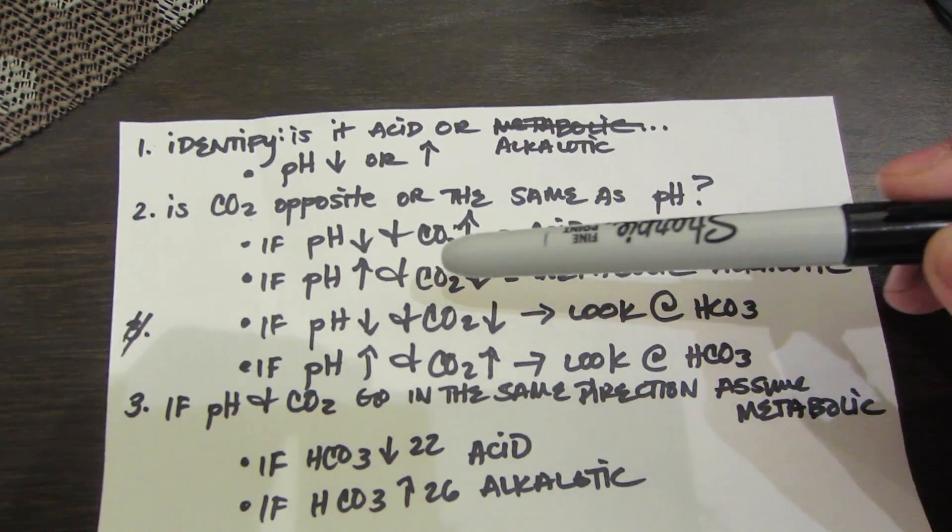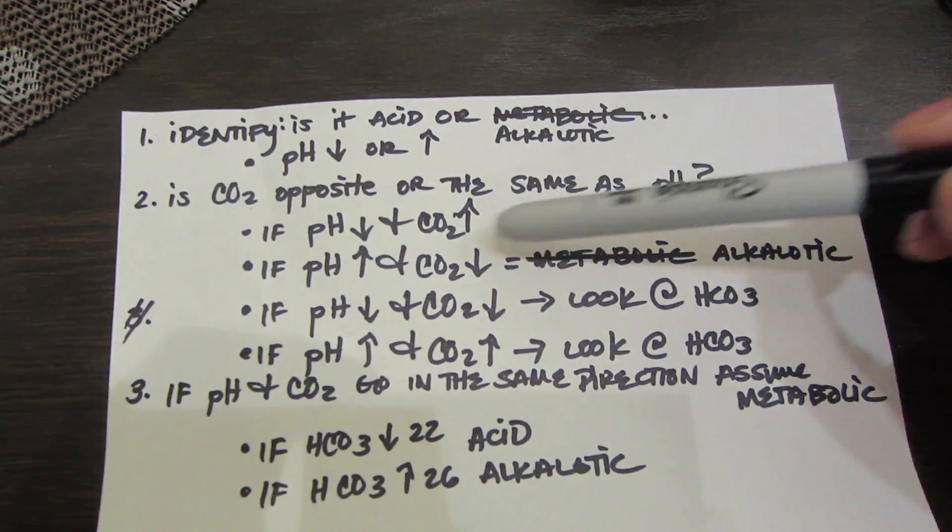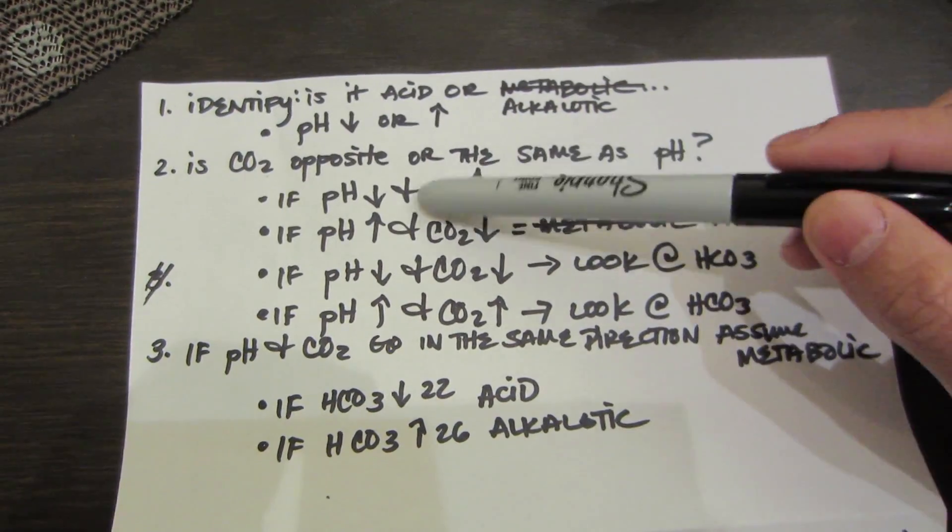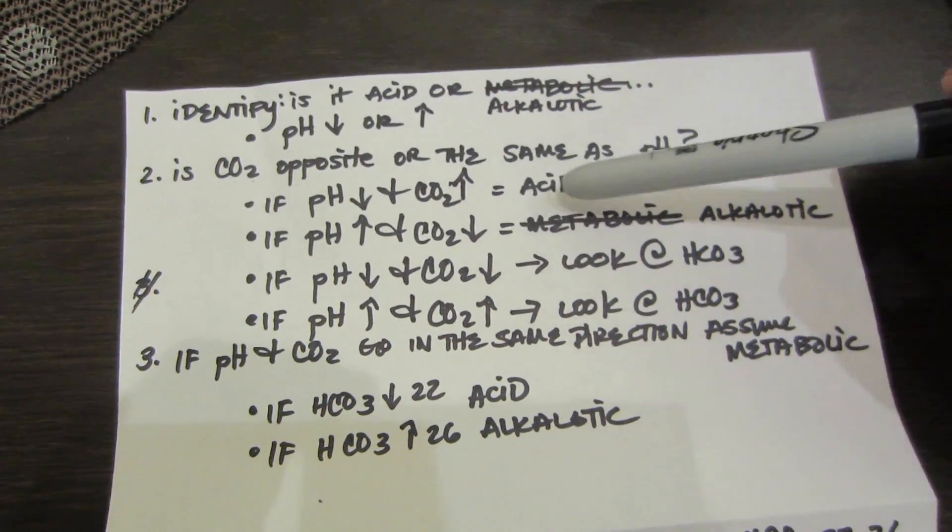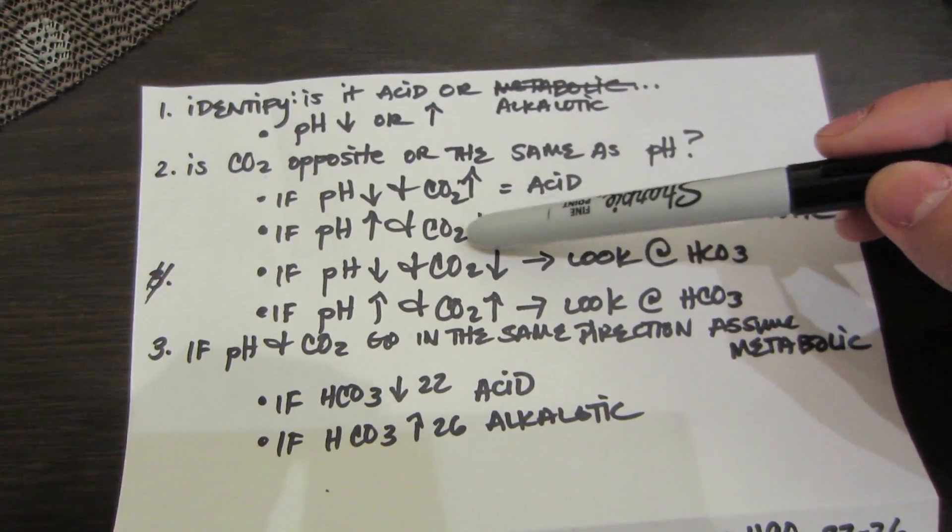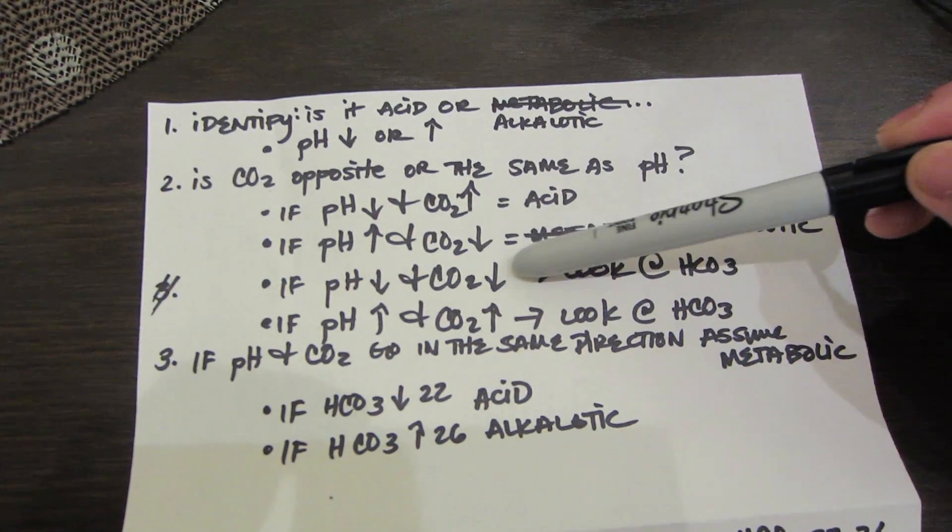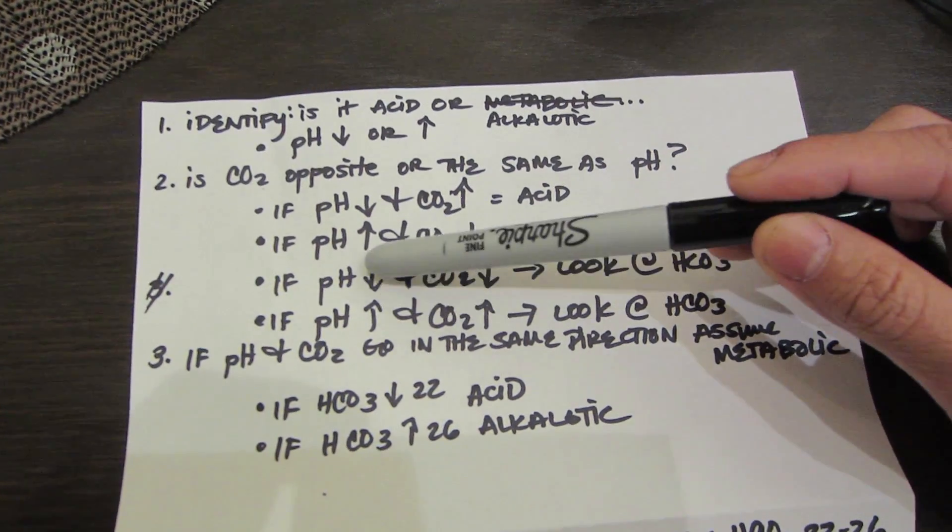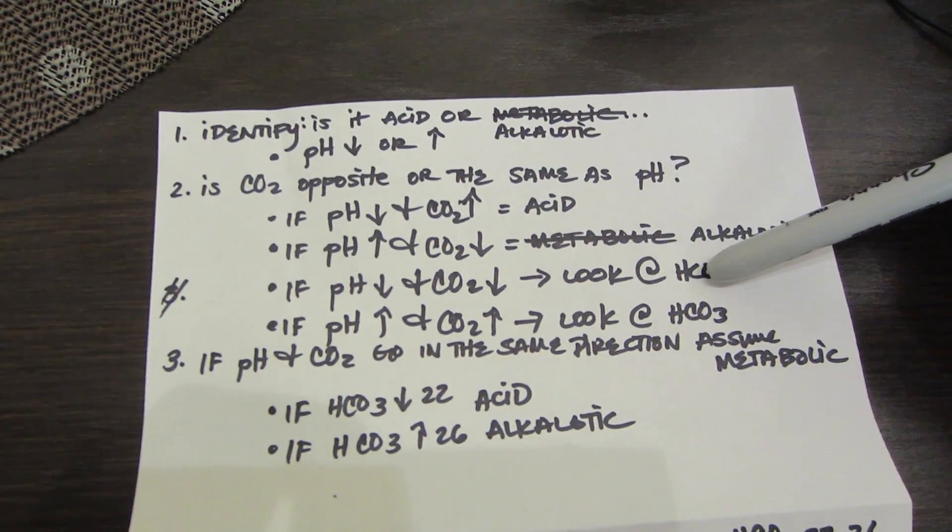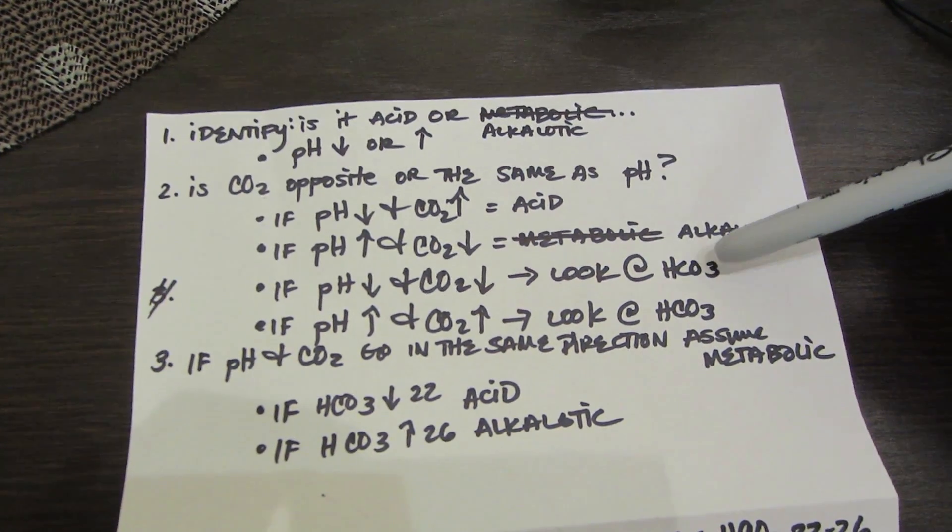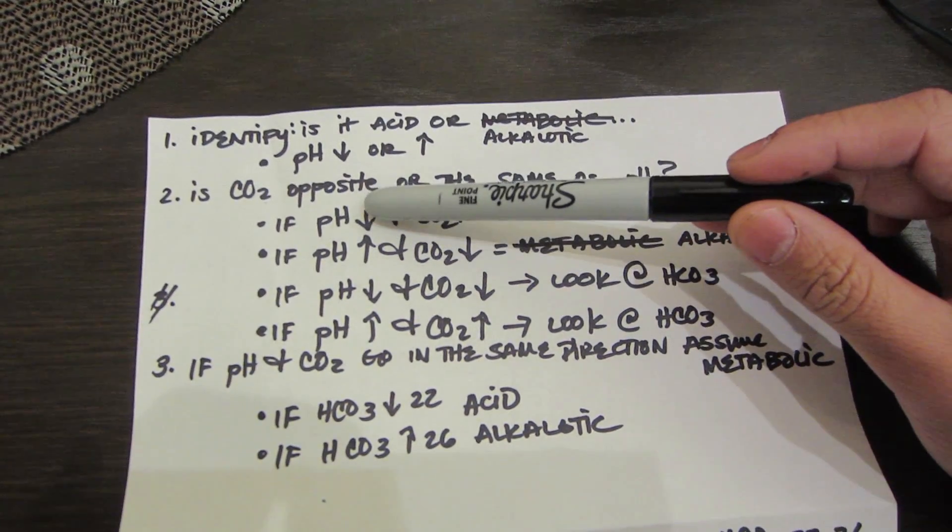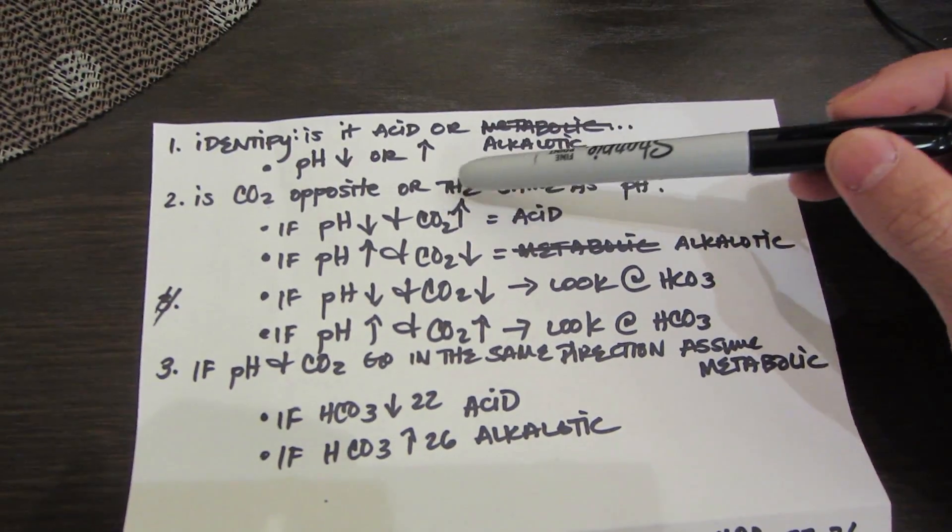The next thing is, is CO2 opposite or the same as pH? So if the pH is low and the CO2 is increased, remember CO2 is respiratory, it's gonna be acid. If the pH is increased and the CO2 is decreased, it's gonna be alkalotic. If they're both in the same direction, or if the pH is low and the CO2 is low, you're gonna take a look at the bicarb right away. What you always want to do is take a look at the pH and CO2 - which direction are they going?